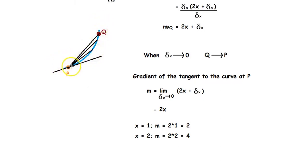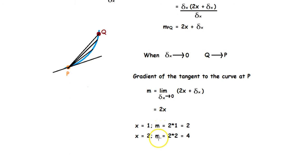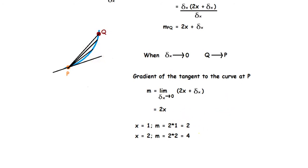This means that 2x is the gradient of the tangent at any point on the curve y = x². So, if we want to find the gradient of the curve when x = 1, the gradient will be 2 × 1 = 2. For x = 2, the gradient will be 2 × 2 = 4. This is how you find the gradient of the tangent using limits for the curve y = x².